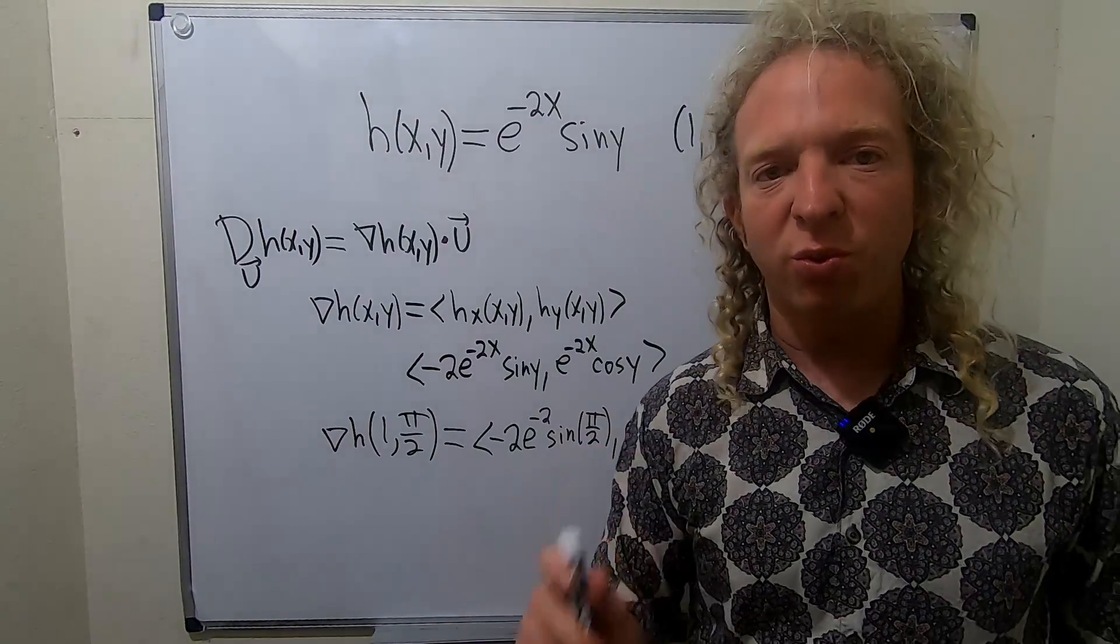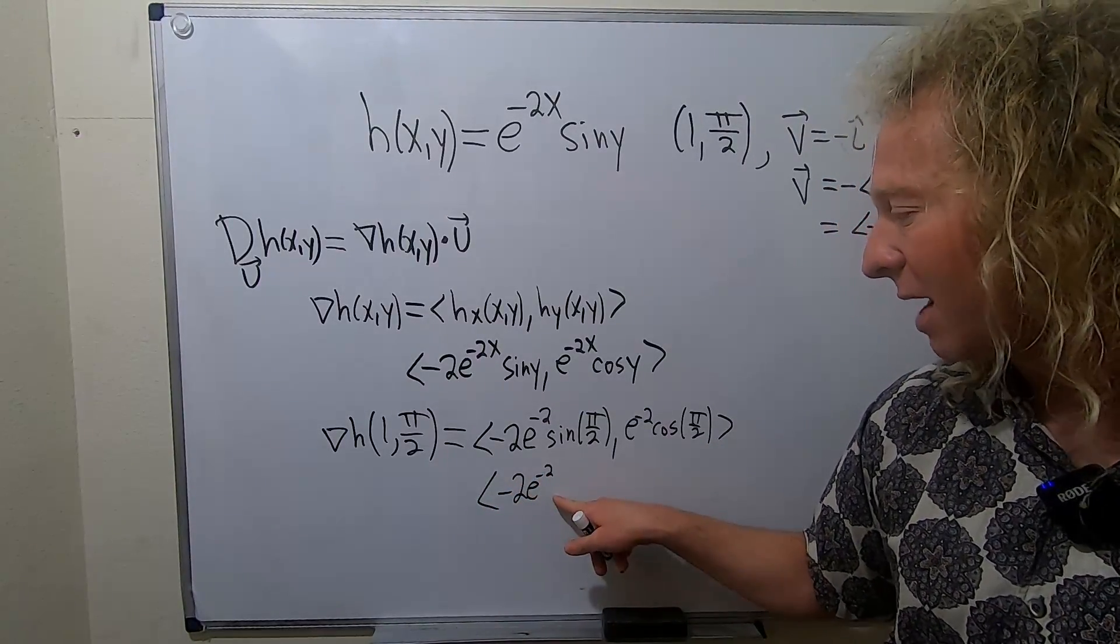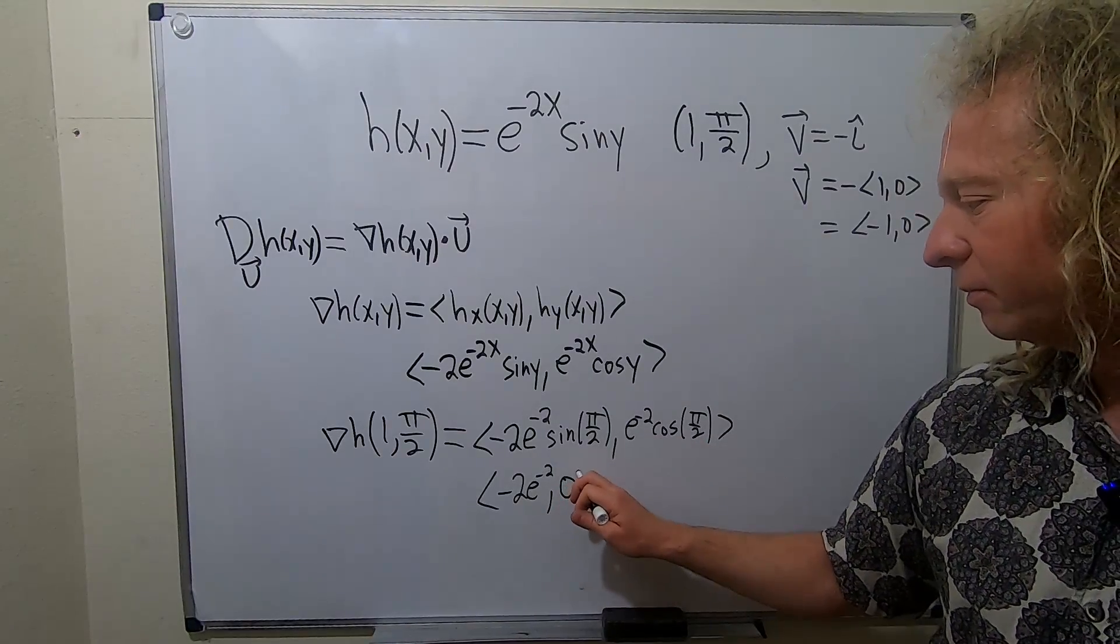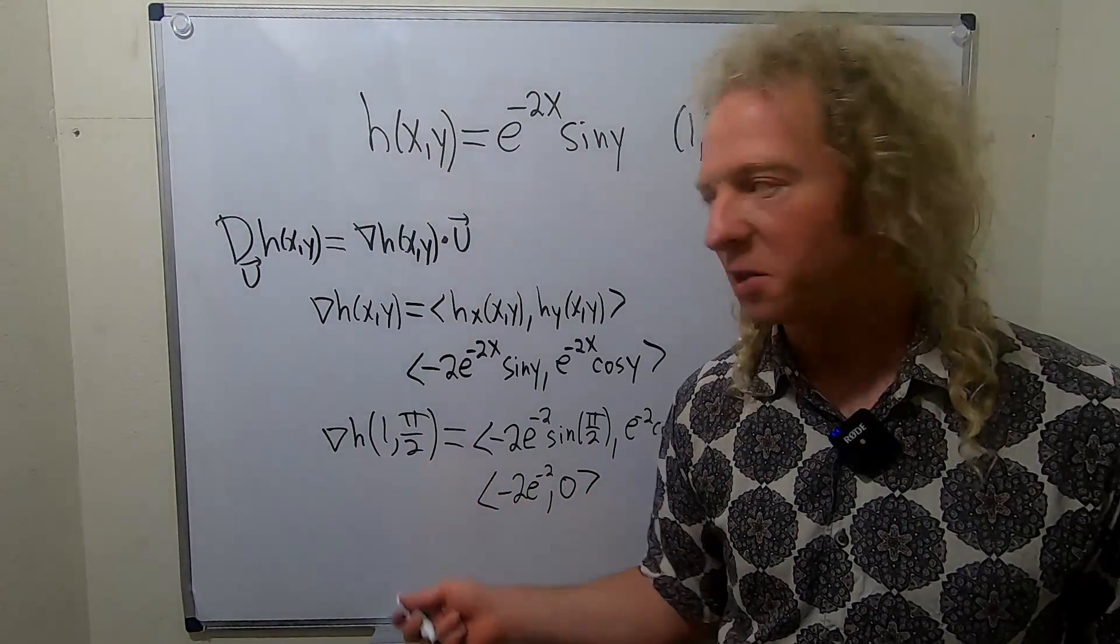Sine of pi over 2 is 1. Cosine of pi over 2 is 0. So this is going to be negative 2 e to the negative 2 times 1. So it's just that. And this is times 0. So here we are. This is our gradient at this point.